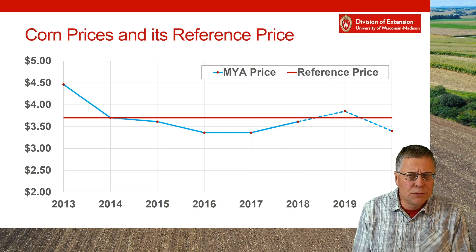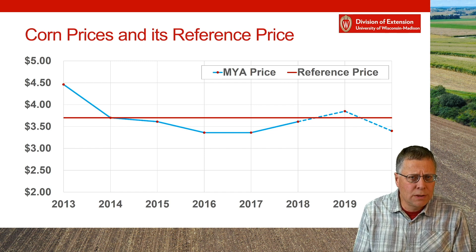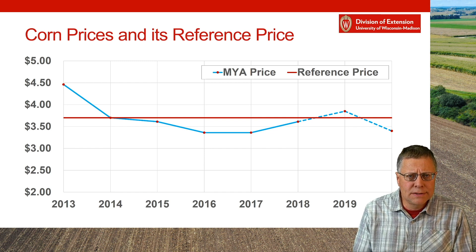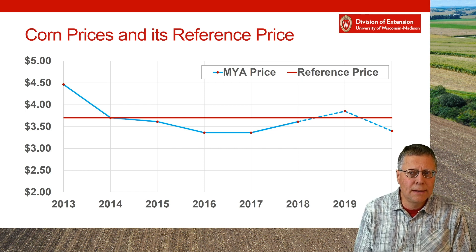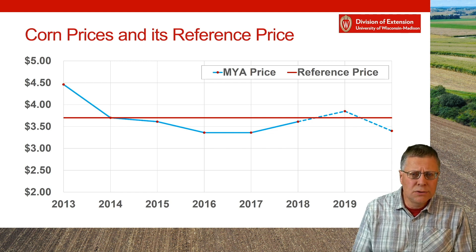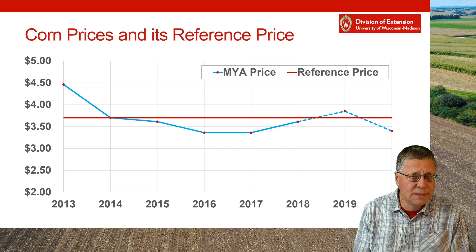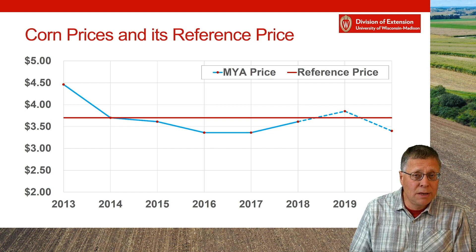We'll start with corn, our largest crop in terms of base acres and payments. The blue line shows historical prices from 2013 through 2018, and the dotted lines show the 2019 and 2020 projected prices from USDA estimates. The red line is the reference price, which gives us the guaranteed price that PLC uses to trigger payments. You can see that historical prices and the projected prices are all very close to that PLC reference price of $3.70.